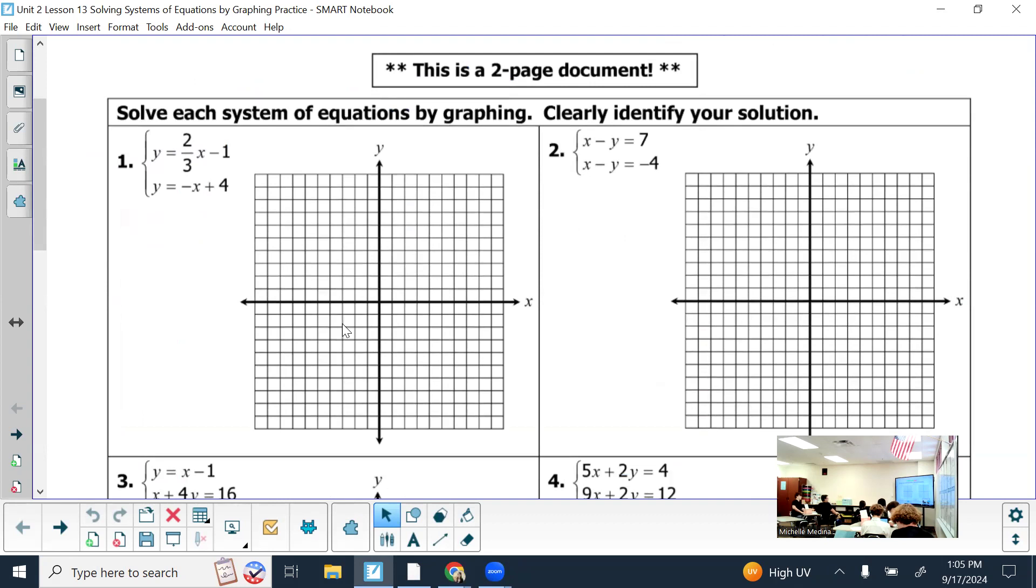Hopefully this helps. In order to graph by hand, what form does it need to be in? And are both of these equations in that form for number one? Yes. Yes, so that makes it easy. I don't have to do any scratch work. All I have to do is graph. The information you need for graphing is slope and y-intercept. What do I graph first?